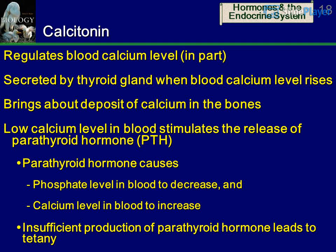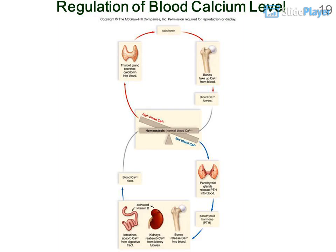Calcitonin promotes positive calcium deposition in bones, lowering blood calcium. Low blood calcium level stimulates release of Parathyroid Hormone (PTH). PTH causes phosphate levels in blood to decrease and calcium levels to increase. Insufficient production of parathyroid hormone leads to tetany. This describes the regulation of blood calcium level.